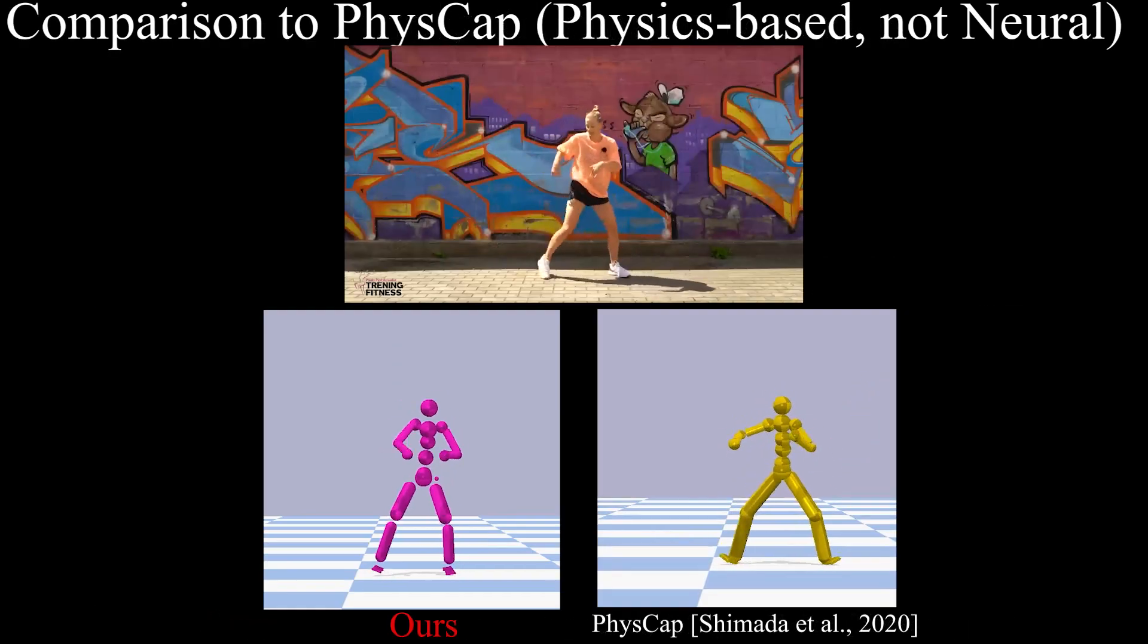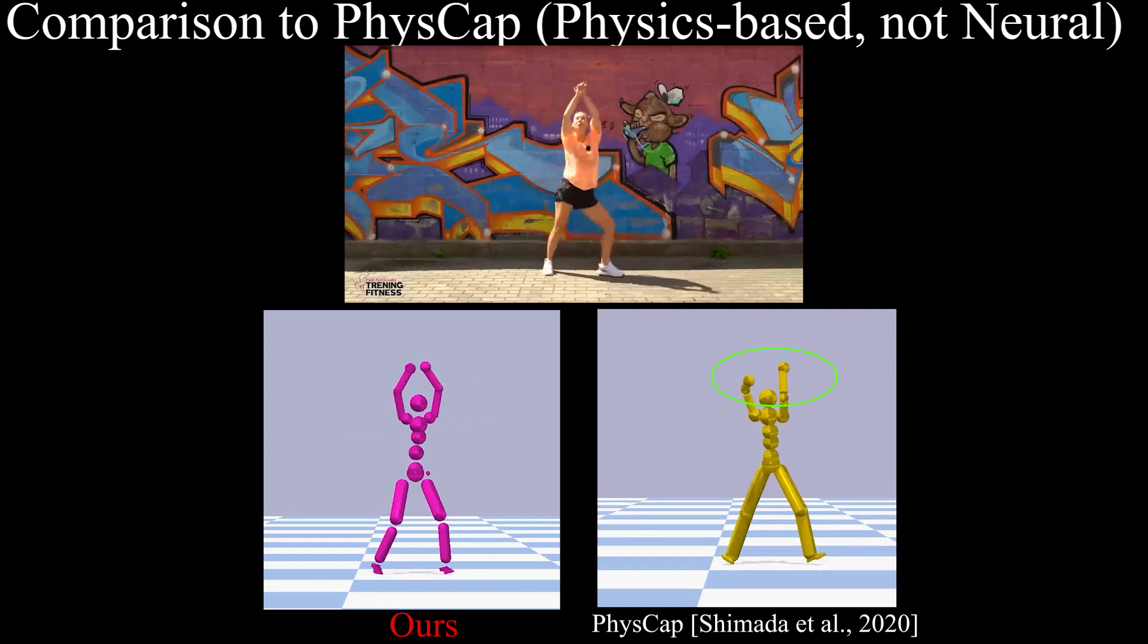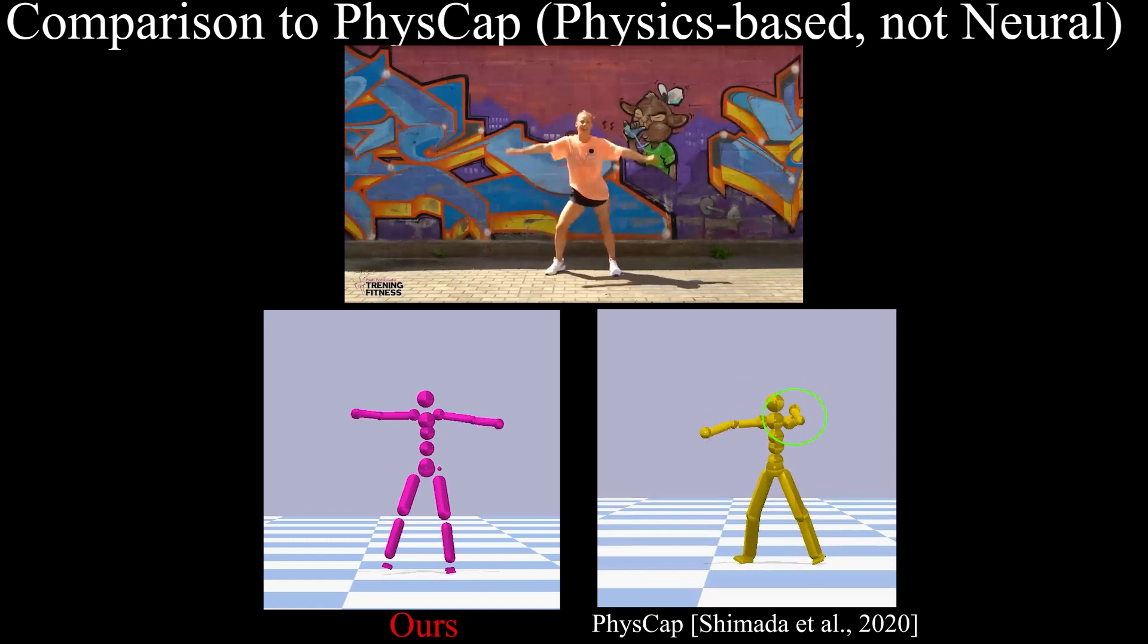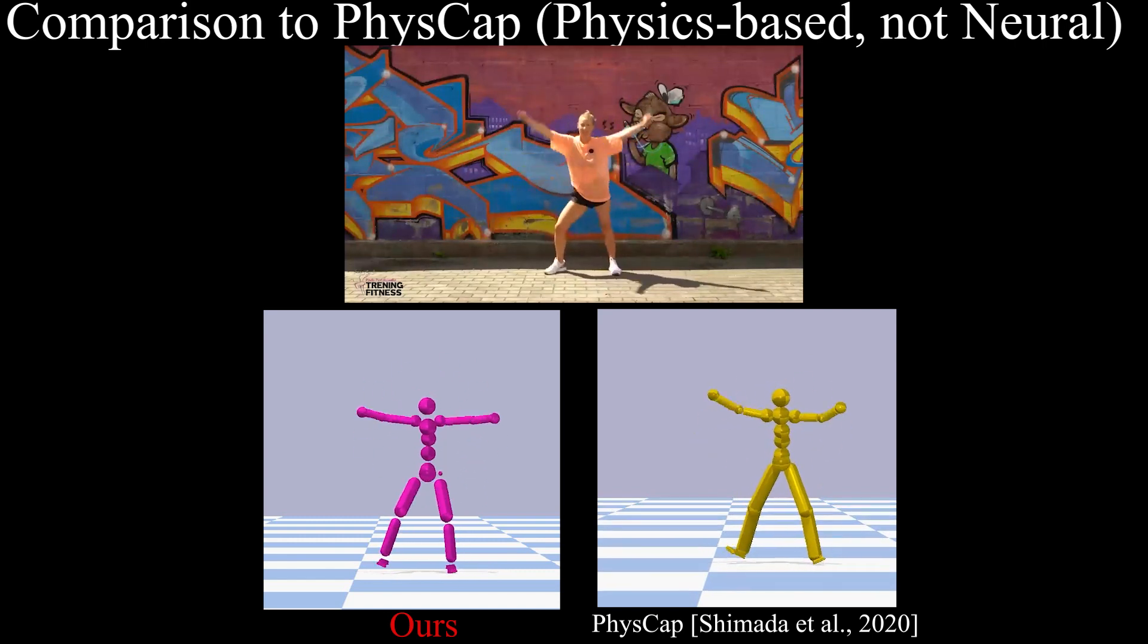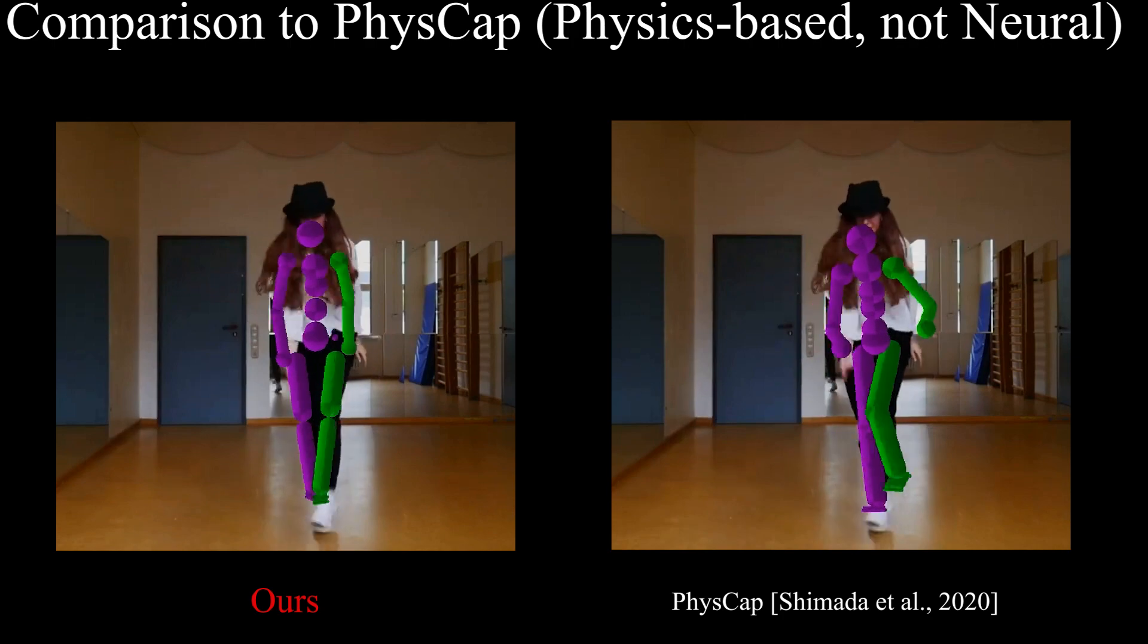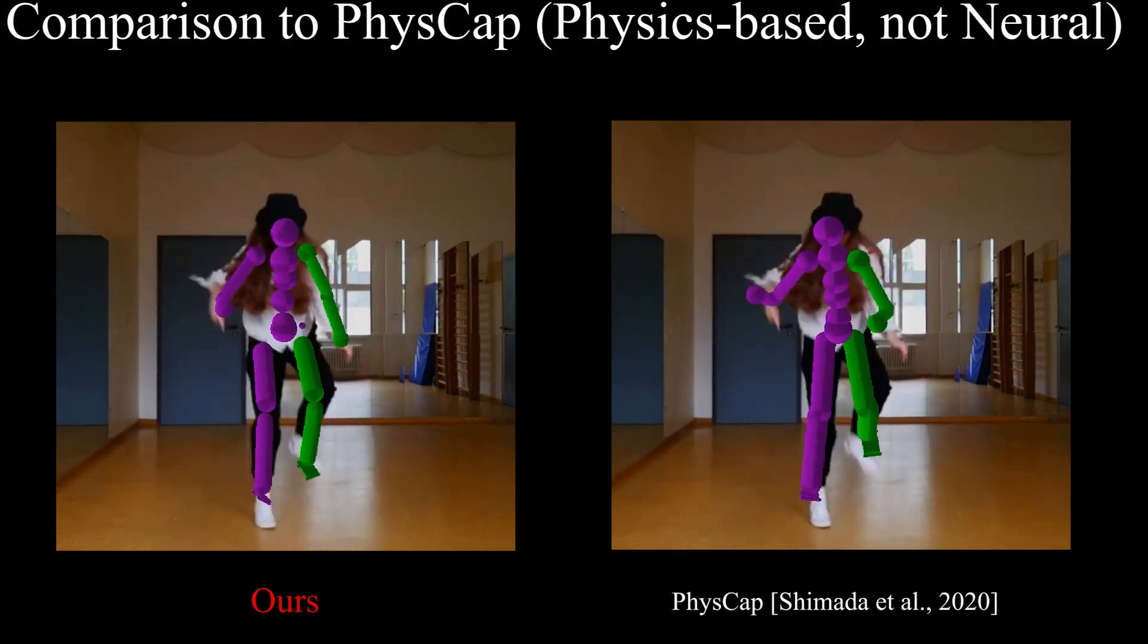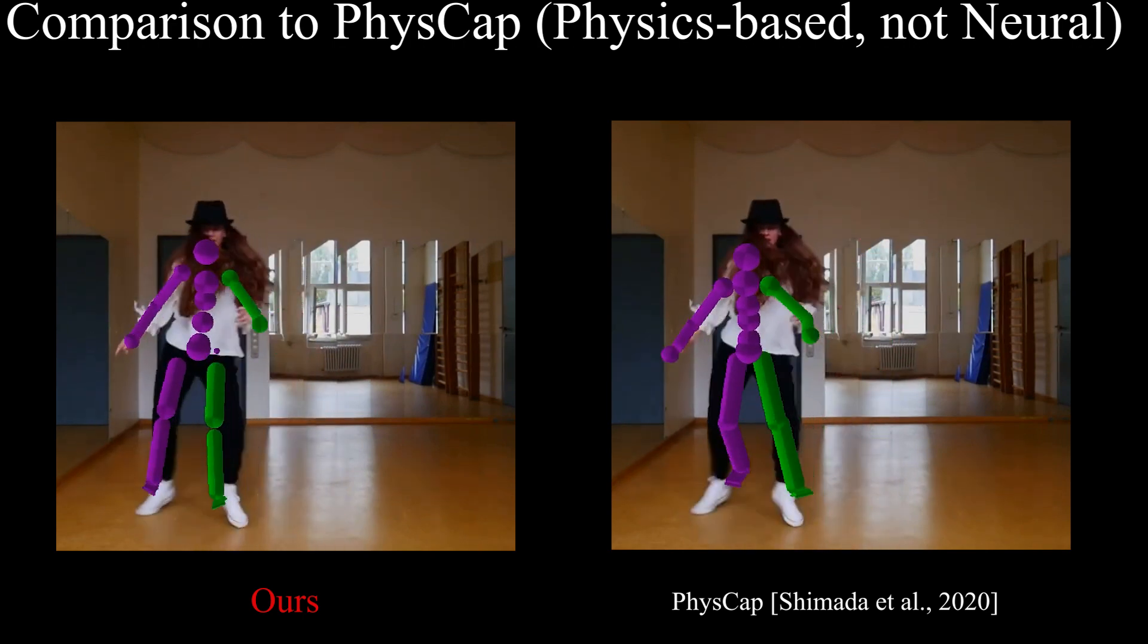We now compare our physionical approach with the physics-based method PhysCap. Both PhysCap's and our 3D reconstructions look smooth and natural. We notice, however, that our method captures articulations more accurately, as can be seen here. The differences are apparent when the results are shown overlaid to the input views. Unlike PhysCap, our neural network-based PD controller dynamically estimates the gain parameters to catch up with the fast motions.